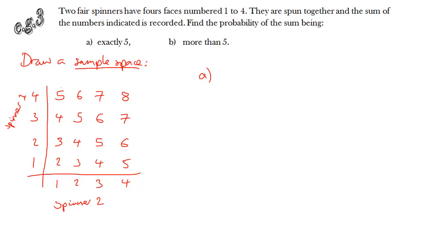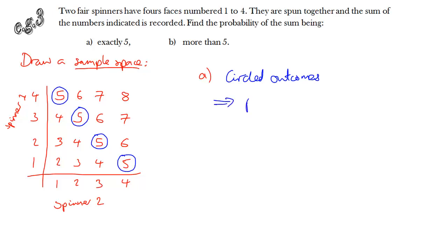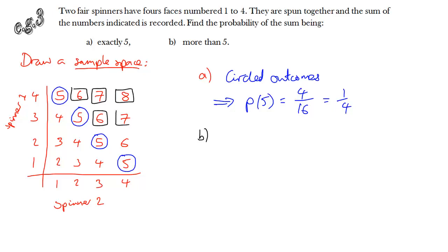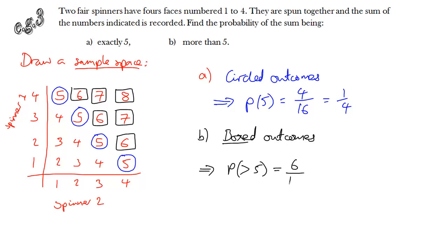What's the probability of getting exactly a sum of five? There are four ways this can happen, so the probability is four divided by 16, which simplifies to one quarter. For the probability of the sum being more than five, note that five is not more than five so it's excluded. There are six outcomes where the sum exceeds five, giving a probability of six divided by 16, which simplifies to three eighths.